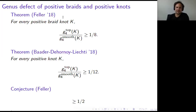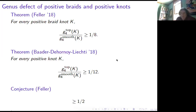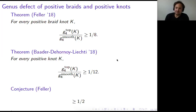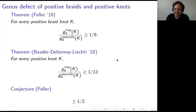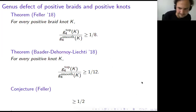These bounds are probably not optimal. There is a conjecture by Feller that this ratio should be at least one-half for positive braid knots. It holds for torus knots as a benchmark, and calculations have never pushed it below one-half. I'm not sure if the conjecture also covers positive knots. One should also ask Peter about it.